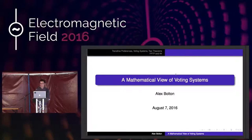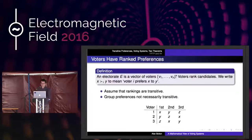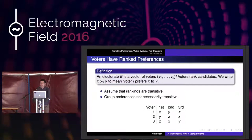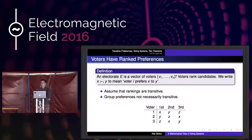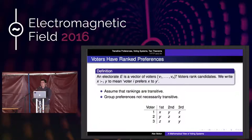An electorate is defined as a set of voters, and voters have transitive preferences. Transitive means: if a voter prefers x to y and prefers y to z, then they must prefer x to z. But even though all the people in the electorate have transitive preferences, it doesn't mean that the electorate overall will have transitive preferences. The table there gives an example: two people prefer x to y, two prefer y to z, and two prefer z to x — so there's no resolution that produces a transitive preference system pleasing everyone.